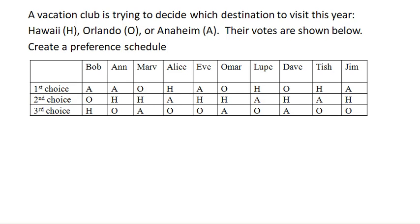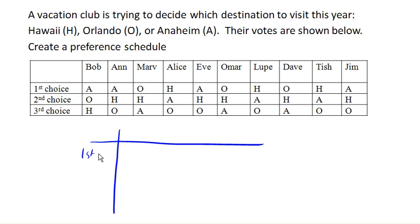What we're going to do is create something called a preference schedule. A preference schedule will take all these individual ballots and combine them into one table, listing first choice, second choice, and third choice.